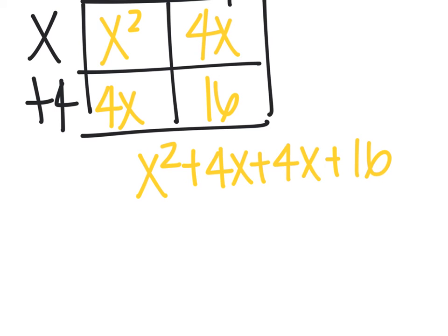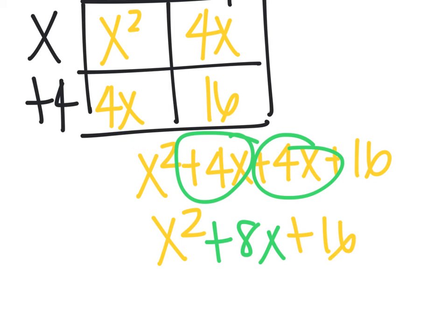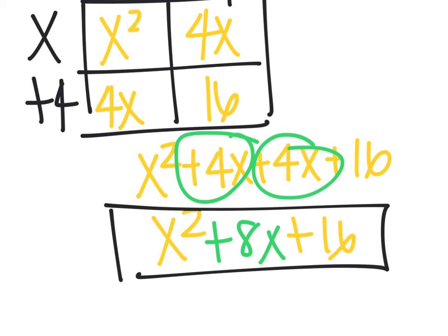I can combine my 4x's together, so I have x²+8x+16. You're welcome to use the box method on this problem.